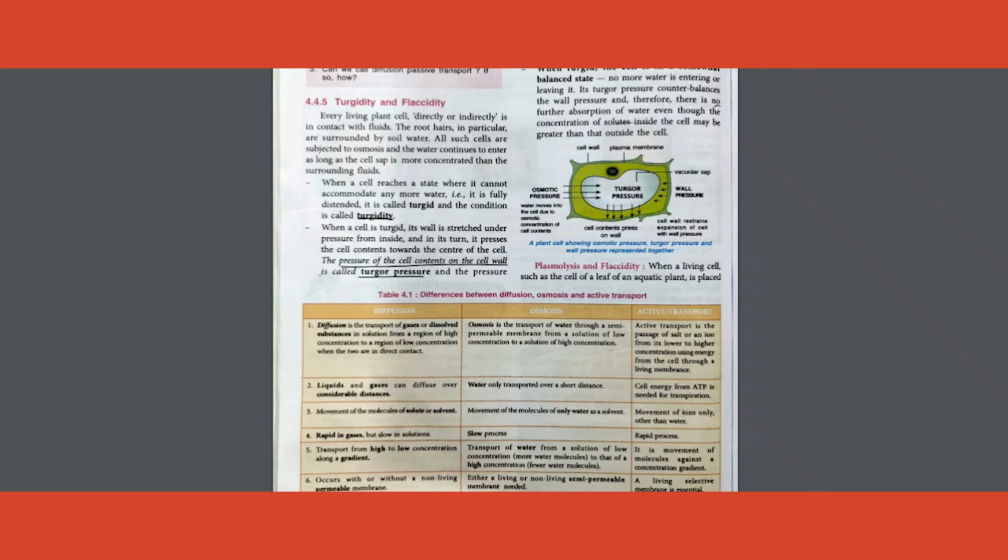This is one MCQ you will get. Sometimes fruits and vegetables burst out - what is the reason? It's the same reason: turgor pressure exceeds wall pressure. Please write that one MCQ you get.